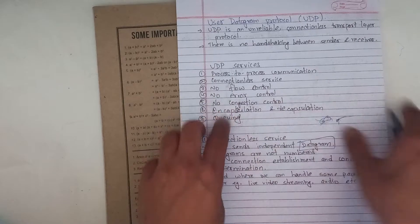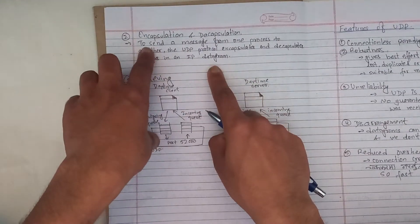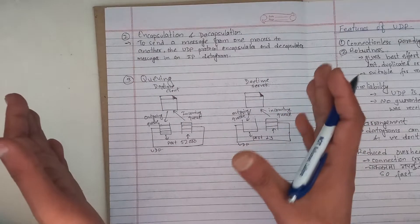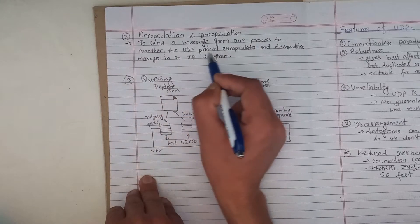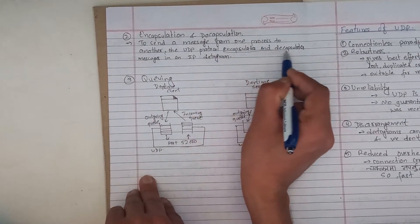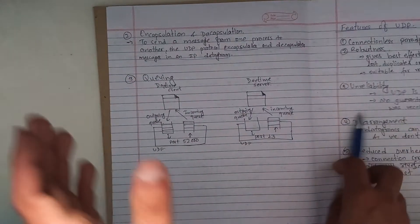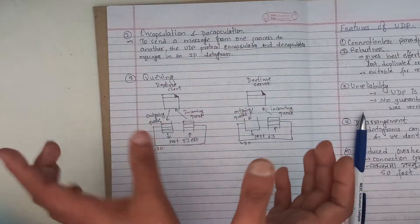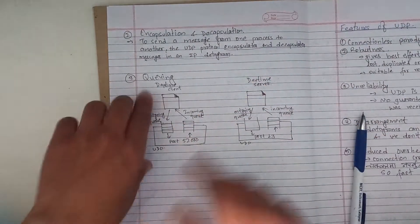Encapsulation and decapsulation — all of these have to be understood. We are now doing what is encapsulation and decapsulation. Encapsulation — what does this mean? To send a message from one process to another, UDP protocol encapsulates and decapsulates the message in an IP datagram. In the form of an IP datagram, it encapsulates the message, and at the receiving end, it decapsulates.